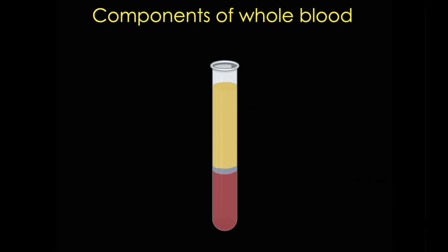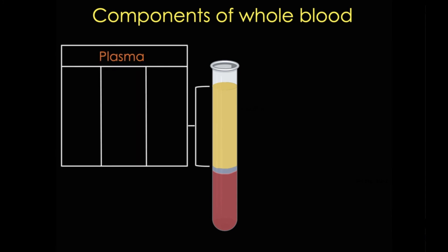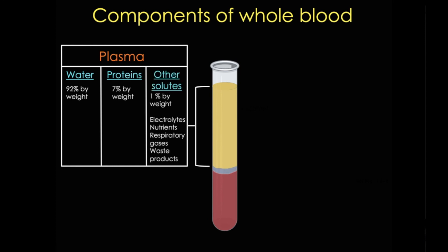Here the top layer, or supernatant, is plasma. It's kind of a straw yellow color, it's translucent, and it's roughly 55% of the volume. Now plasma is an aqueous solution, so that means it's mostly water, but it also contains other components such as plasma proteins and nutrients, waste products, hormones, and electrolytes or organic ions.